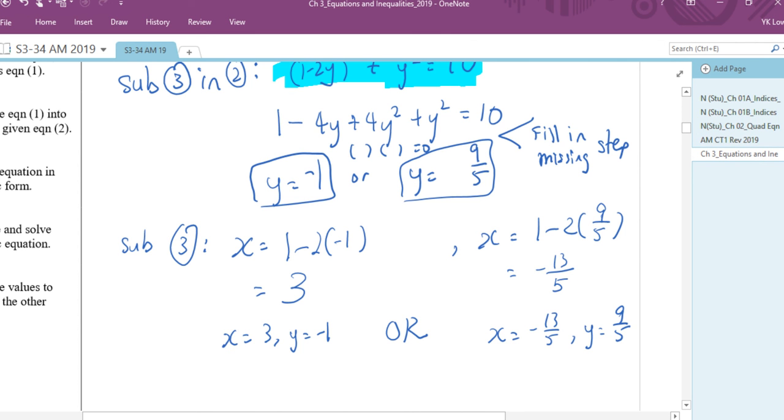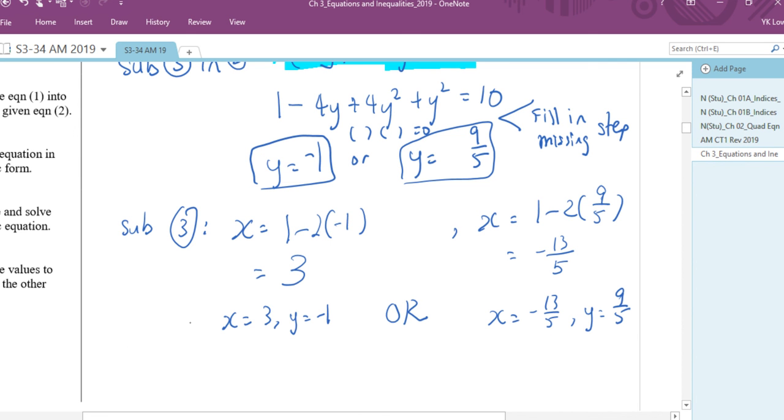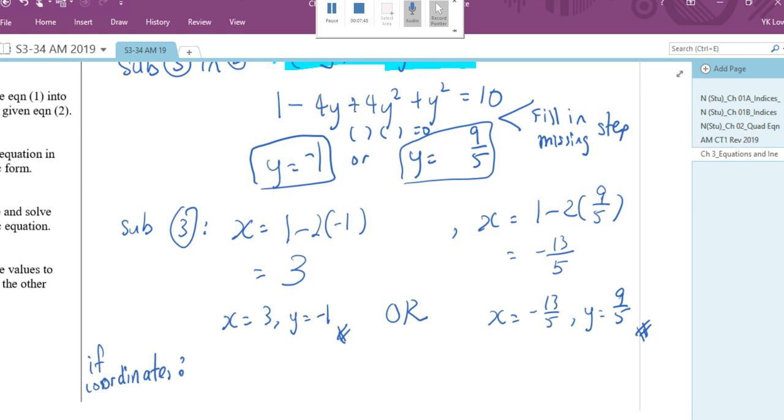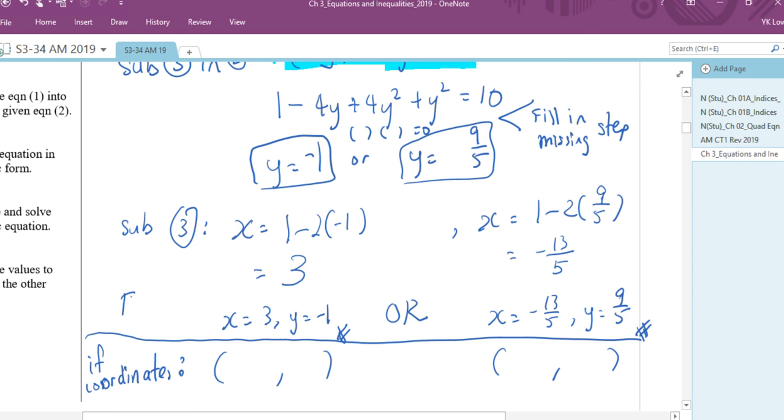Now can you end off the answer by writing: x equals 3, comma, y equals negative 1, or x equals negative 13 over 5, comma, y equals 9 over 5. Don't listen... I mean you must listen, but listen and copy at the same time so that I can move the screen away quickly. Now write down this is the final answer. Write down if it's coordinate. Can you write down bracket, something, comma, something, bracket, something, comma, something. Now draw a line, so this is the final answer, nothing more. But if I ask you to express as coordinate, what will you write? 3, negative 1, the other side, negative 13 over 5, 9 over 5. All done.